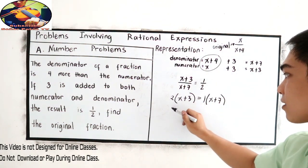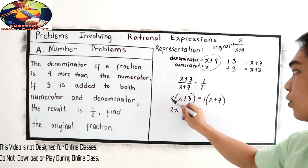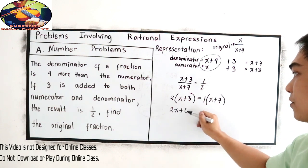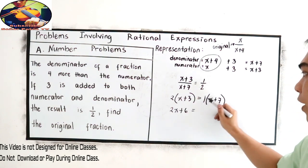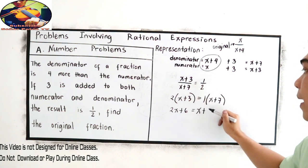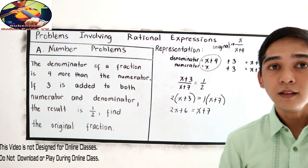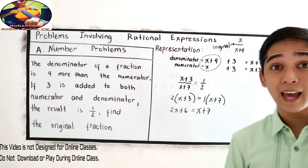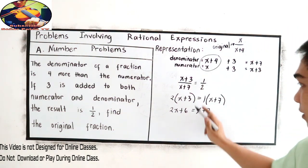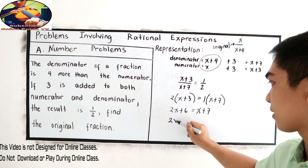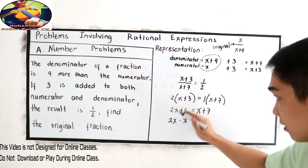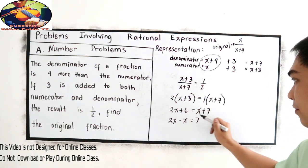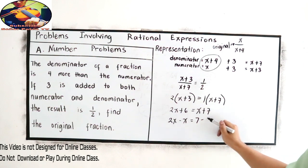Two times x will become 2x. Two times three, positive six is equal to one times x, that is x. One times seven, positive seven. Now combine like terms. So I suppose 2x minus x is equal to seven minus six.